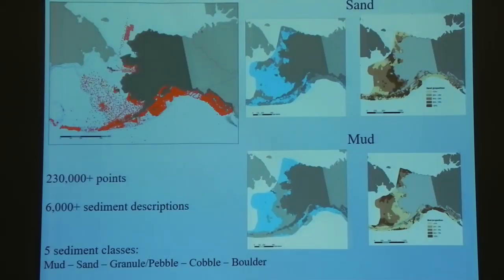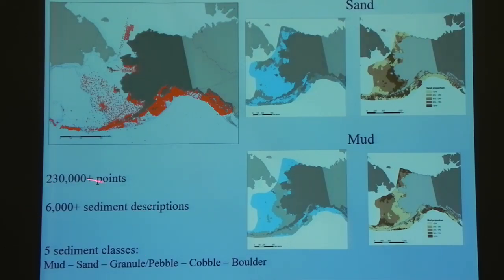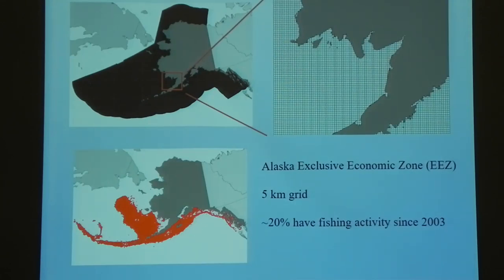Since we don't have distribution of habitat features directly, we do have distribution of sediment throughout the North Pacific. We sifted through NOAA's databases and archives and found every place that they have a description of sediment — ended up being over 200,000 points described over 6,000 different ways. We condensed that into five sediment classes for our model: mud, sand, granule, gravel, and boulder. We then make distribution maps for each of those five sediment categories to put into our model.